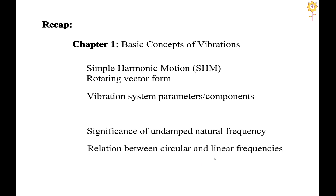There are two types of frequency. Circular frequency is denoted by omega in radians per second, and linear frequency f is in cycles per second or hertz. The relationship is omega equals 2 pi times f, or equivalently f equals omega divided by 2 pi.